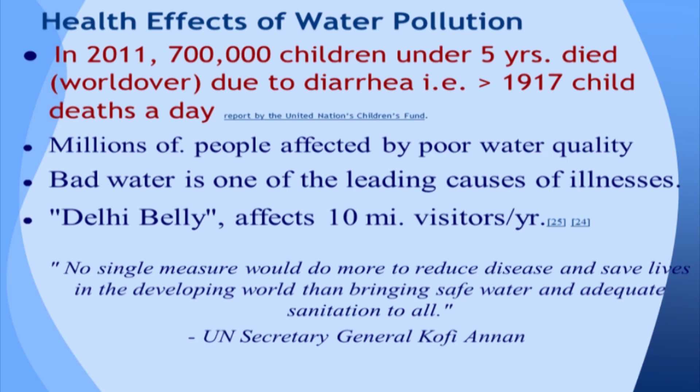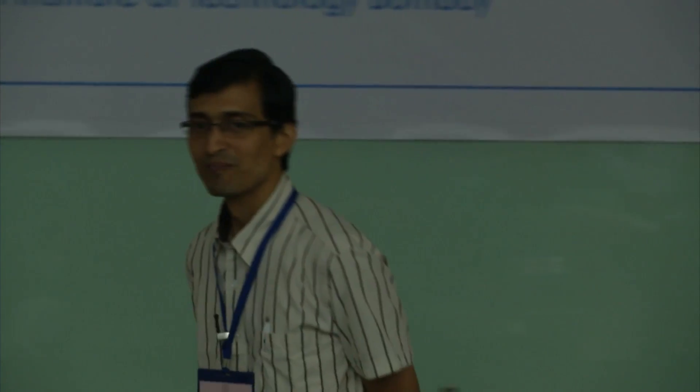In 2011, some 700,000 children under five years died due to diarrhea alone. This does not include other deaths caused by polluted water. Malaria is one major killer. Water quality affects every one of us — I am sure that maybe in the past five years you must have had a stomach upset due to this.